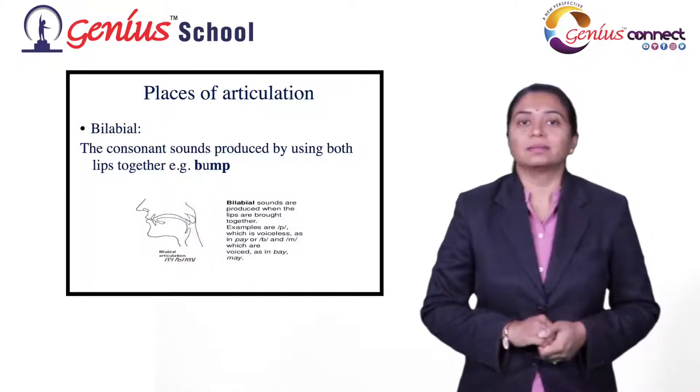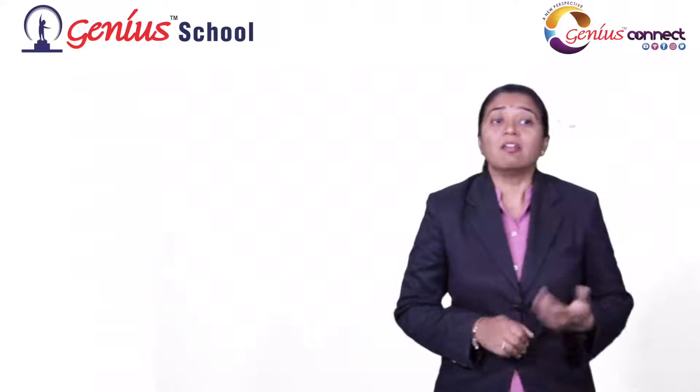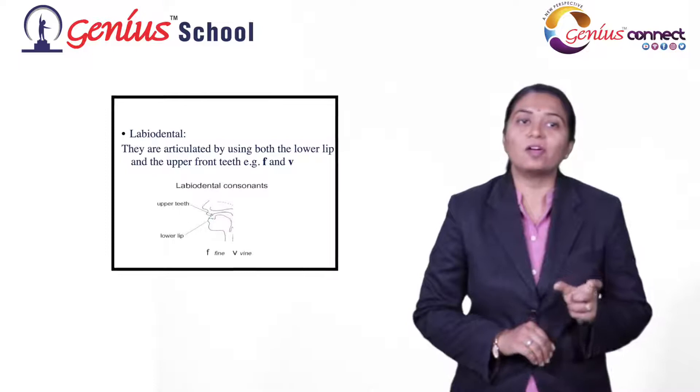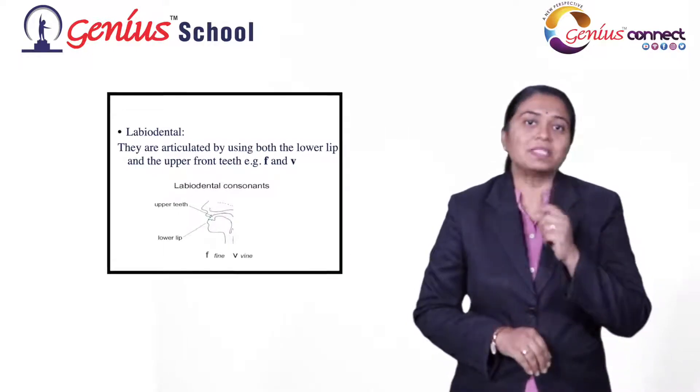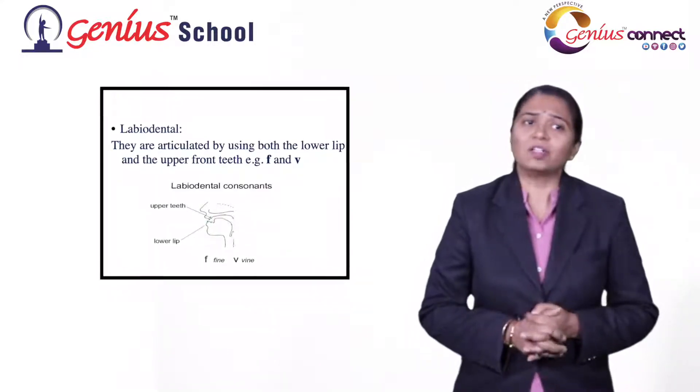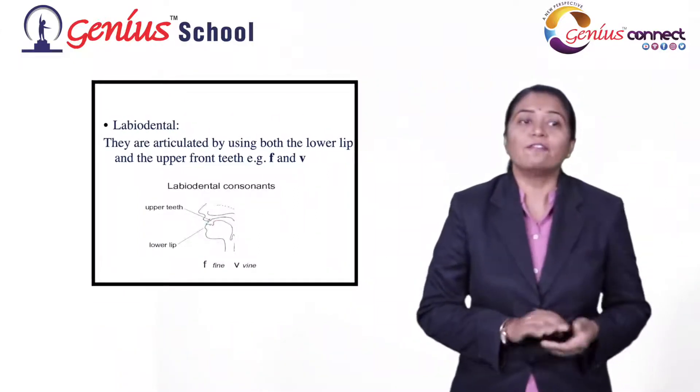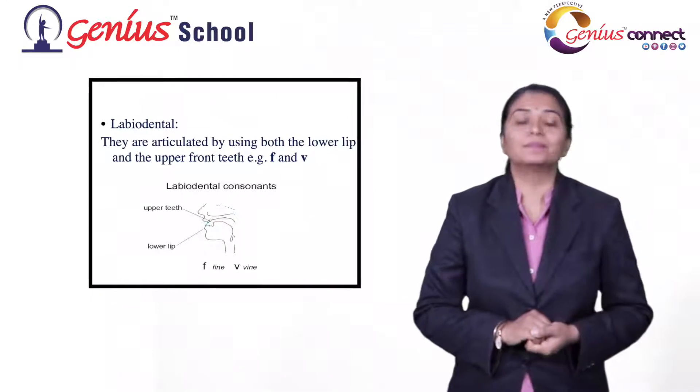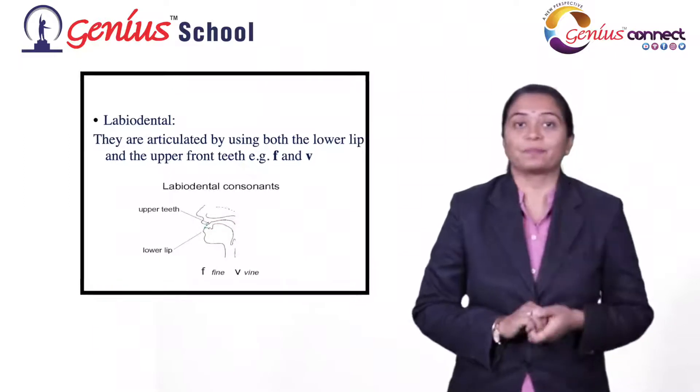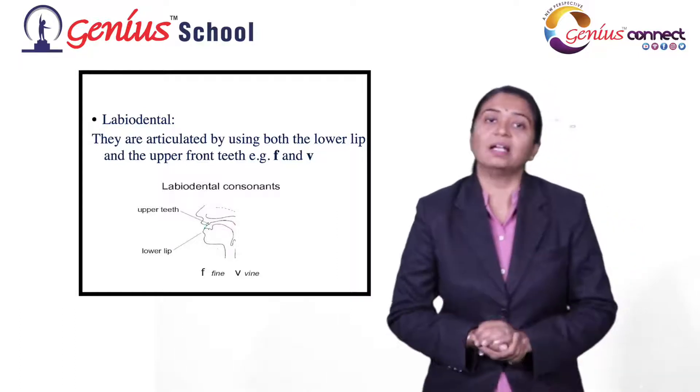Second is labiodental. It's your lips and your teeth. The sound is articulated by using both the lips and upper front teeth. For example, fur, your lower lip and front teeth, fish, violin. They are labiodental.